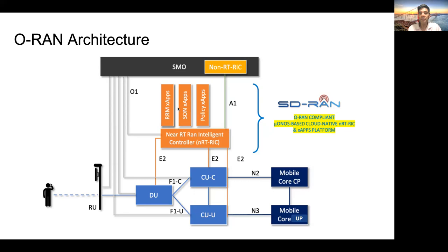ONF, as part of the SD-RAN project, is developing an O-RAN compliant RIC that is microservices-based and cloud-native. It is also developing X-Apps along with its partners that are hosted on the RIC and implement the service-specific functionality.